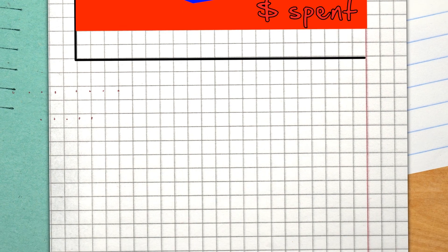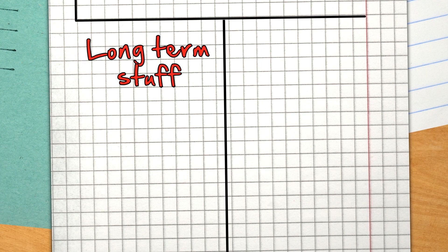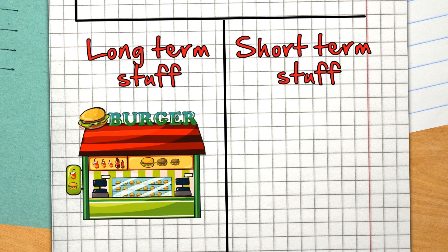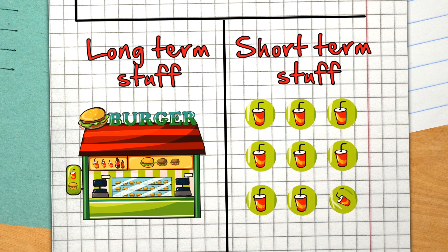However, a business has to spend on long-term stuff and short-term stuff. For example, if your business spends on a new shop, this is a long-term thing. If it spends on the cost of lemons because you're selling lemonade in a lemonade shop, this is a short-term thing.